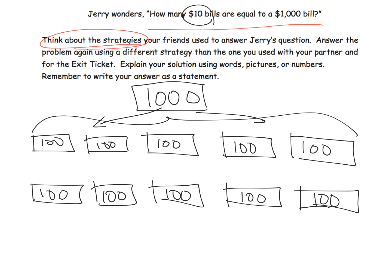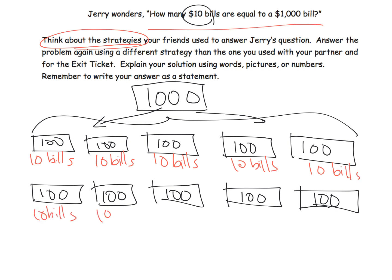But we want $10 bills. How many $10 bills does it take to make $100? It takes 10 $10 bills. So I'm going to put 10 bills to make $100. It takes another 10 bills to make that $100, and another 10 bills, and another 10, and another 10 — I better write the word 'bills' here — and another 10 bills, another 10 bills. It takes $10 bills to equal $100.